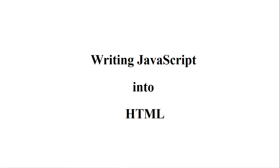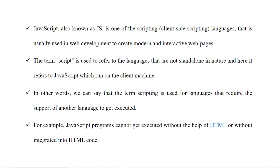As you know, JavaScript, also called JS, is one of the scripting languages. Which scripting language? Client-side scripting language. We know that there are two types of scripting languages: server-side and client-side. JavaScript is a client-side scripting language and it is usually used in web development to create modern and interactive web pages. The term 'script' is used to refer to languages that are not standalone in nature, and here it refers to JavaScript which runs on the client machine.